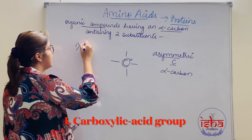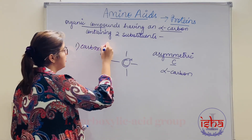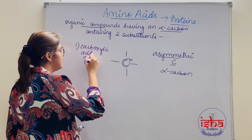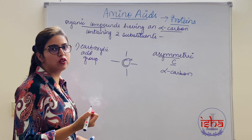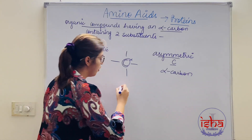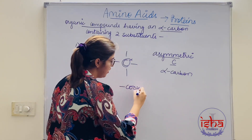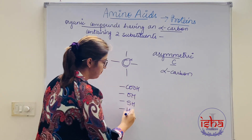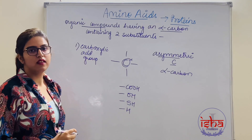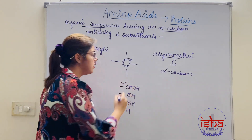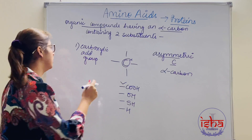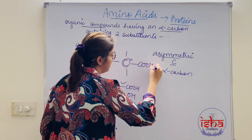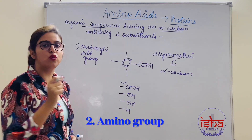This alpha carbon has some substituents. The first is a carboxylic acid group. Take a second and try to think: which is the carboxylic acid group? Is it COOH, OH, SH, or simply H? The carboxylic acid group is COOH — that is my first substituent. The second substituent is an amino group.